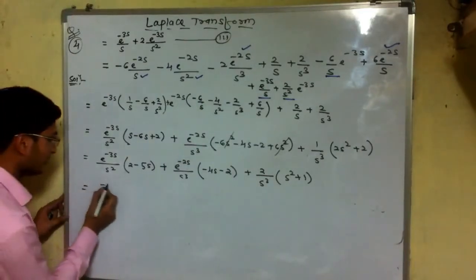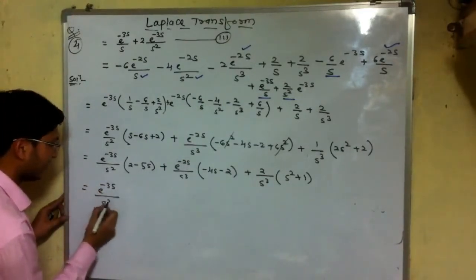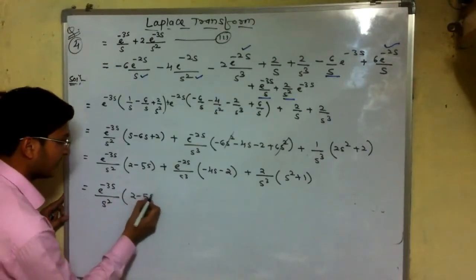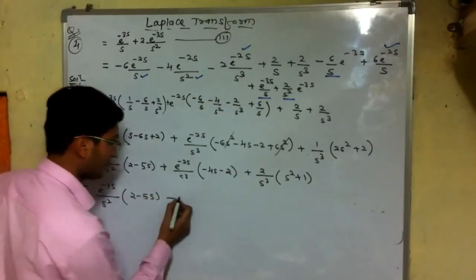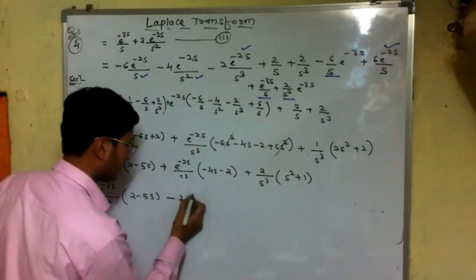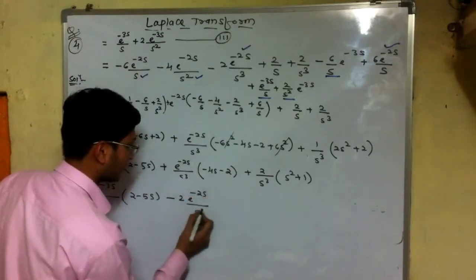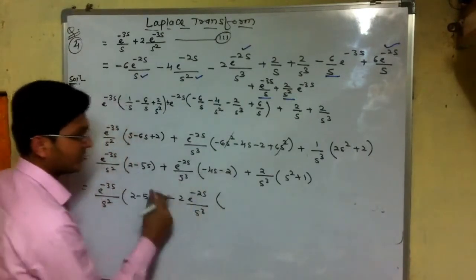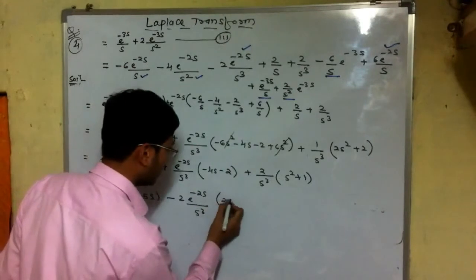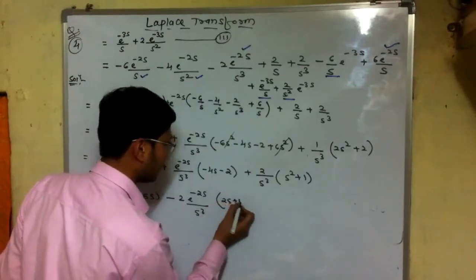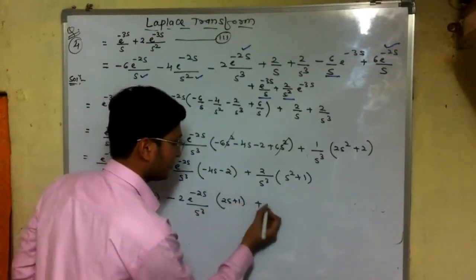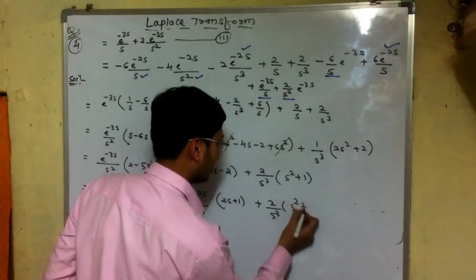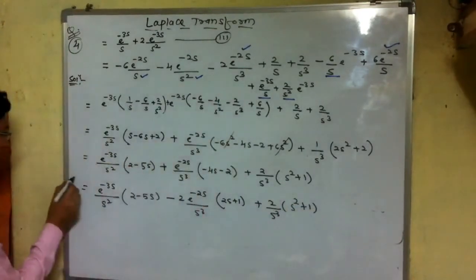Further simplifying: taking 2s as common from (−4s − 2) gives −2(2s + 1). This is the final simplified answer for the Laplace transform of the given piecewise function.